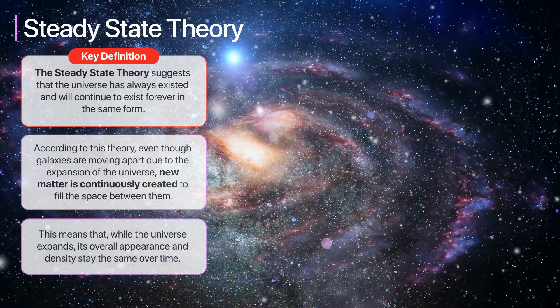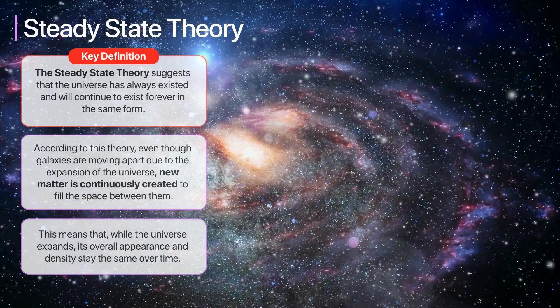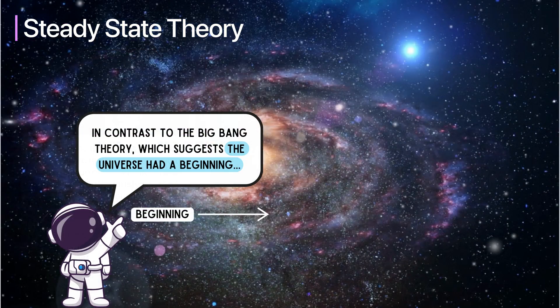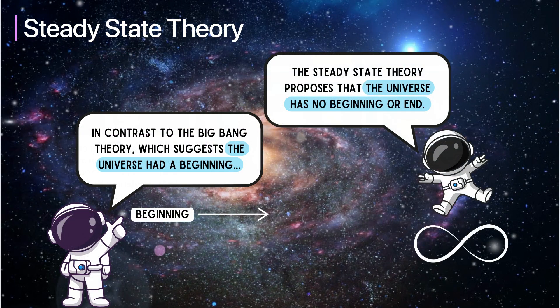This means that while the universe expands, its overall appearance and density stay the same over time. In contrast to the Big Bang Theory, which suggests the universe had a beginning, the steady-state theory proposes that the universe has no beginning or end — it remains constant on a large scale. The idea of matter being continuously created helps explain how the universe can expand without becoming less dense over time. Despite its innovative approach, the steady-state theory faced challenges as new evidence began to favour the Big Bang Theory.